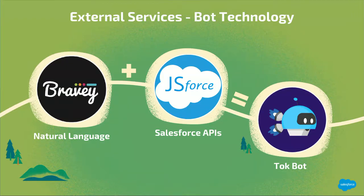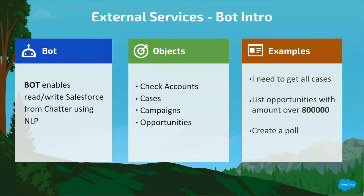The second external service we're going to cover is Bravy. Bravy is a natural language JavaScript API, and we're going to be using it in conjunction with JS Force. JS Force is another JavaScript API that interacts with Salesforce APIs as a single point of contact. Our Talkbot basically enables you to read and write to Salesforce objects, and perform queries on standard objects like accounts, cases, campaigns, and opportunities, as well as any custom object in your org.